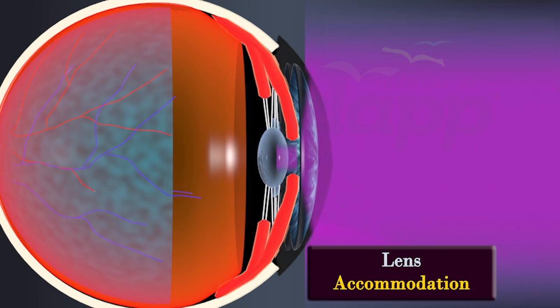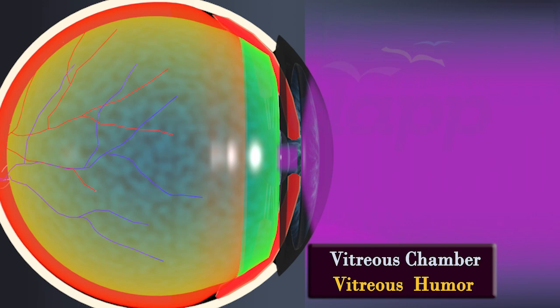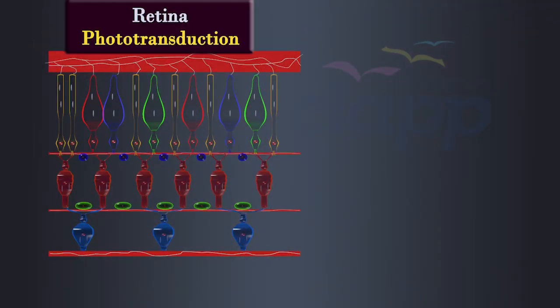After passing through the lens, the light reaches the vitreous chamber, which is filled with vitreous humor. The light passes through the vitreous humor to reach the retina in the back of the eye. The retina is a layer of light-sensitive cells at the back of the eye.